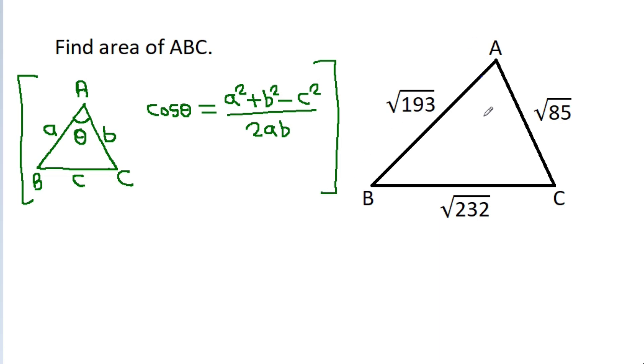And here, suppose this angle is theta, then we apply the cosine rule by substituting the given side lengths AB = √193, AC = √85, and BC = √232.